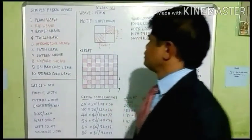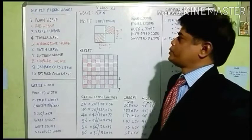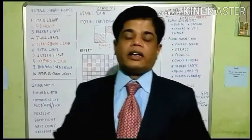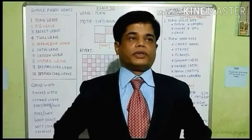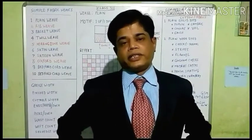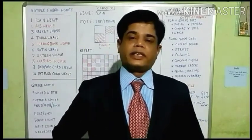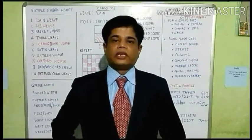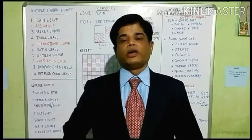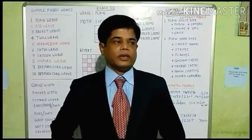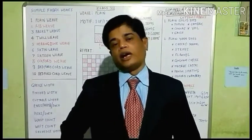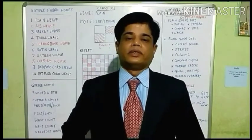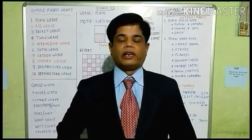The Fabric Views — in my previous classes I have already discussed about Fabric Constructions, how fabrics are constructed in the weaving mill, in the looms — that may be hand loom, power loom, auto loom, or whatever the loom — and how the warp ends and weft ends are interlaced to weave the fabric.